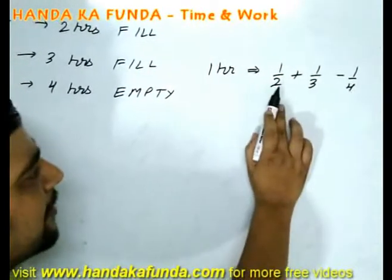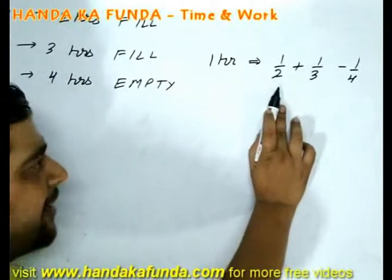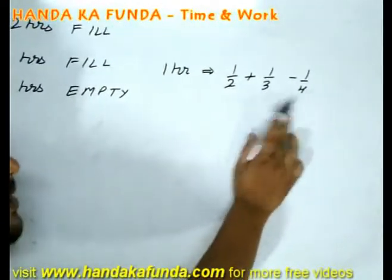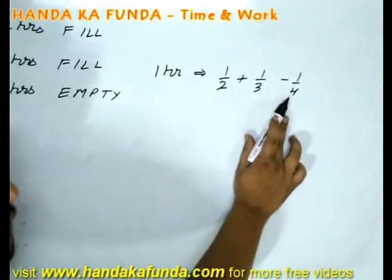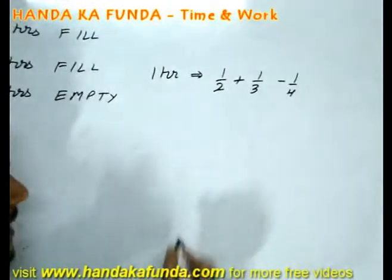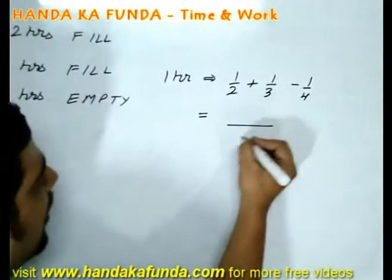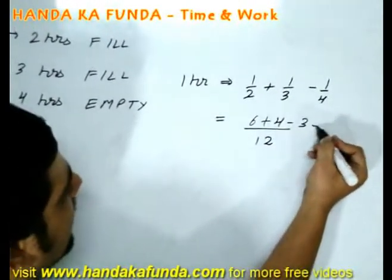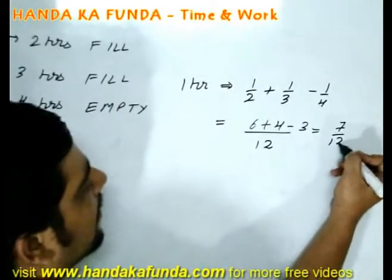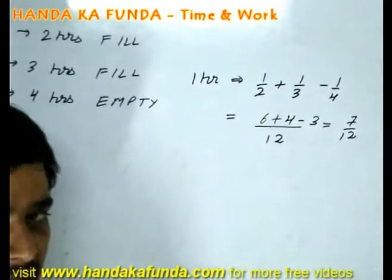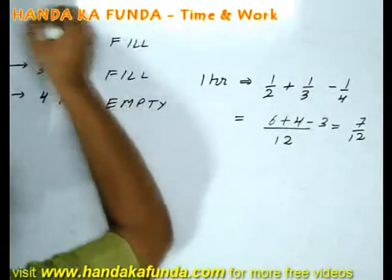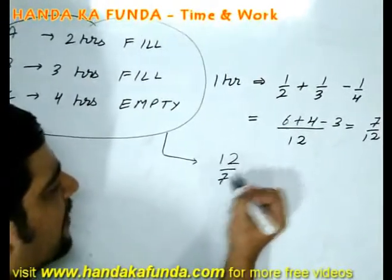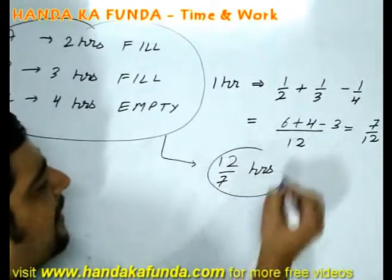Since A is filling and we want to fill the tank, A is positive. B is filling and we want to fill the tank, so B is positive. C is emptying while we want to fill — that is the opposite, so it is negative. The total work done in one hour: with LCM 12, that is 6 plus 4 minus 3, which equals 7/12 of the tank. That means all three working together will take 12/7 hours to fill the tank completely.